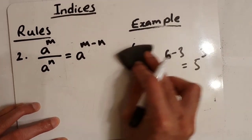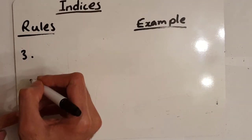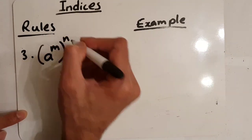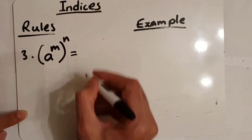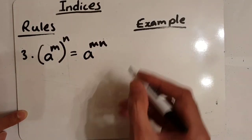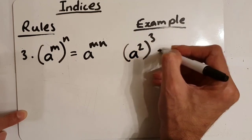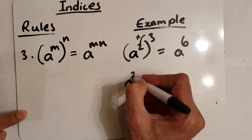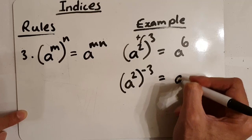Rule number three is when you raise a power. So we have a to the power of m to the power of n — we have a power and outside the bracket we have another power. In that case, we multiply these two powers, giving us a to the power of m times n. For example, a to the power of two to the power of three gives us a to the power of six. With a negative, a to the power of two to the power of minus three gives us a to the power of minus six. Using numbers, five to the power of two to the power of three gives us five to the power of six.